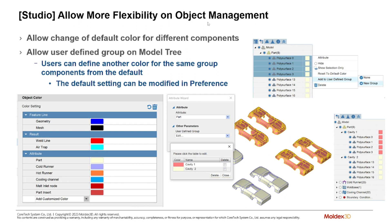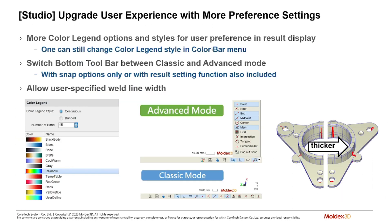We've created an object management system — every object inside MoldX3D can be added to a user-defined group. These groups allow you to toggle visibility and assign different colors, giving you more control over the model tree and allowing you to interact with objects more like a CAD system. From the previous version, the advanced mode for your snap toolbar is in the bottom right corner — you can change this to classic mode to display individual snap buttons in your toolbar.